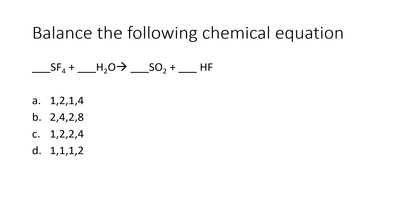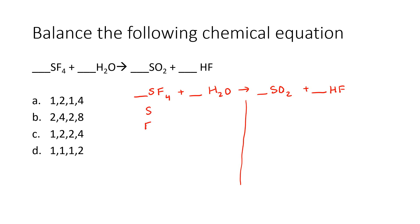Balance the following chemical equation. First step: list all of the atoms that you have — they must be the same on both sides. Assuming we have one of everything, we have one sulfur on the left, four fluorines, two hydrogens, and one oxygen. On the right, we have one sulfur, one fluorine, one hydrogen, and two oxygens. So this is not balanced.